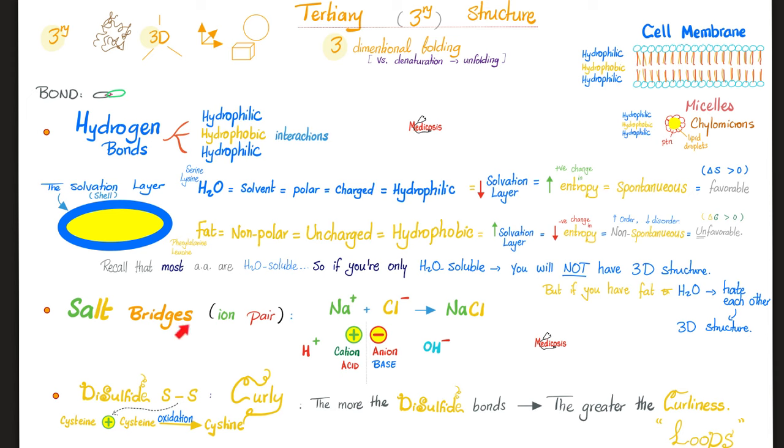And the crazy mnemonic again, yoga bridges are 3D in shape. Why do you wear 3D yoga bridges to show your curves and curls? Curls? Curly? Why am I curly? Disulfide bonds. The more disulfide bonds you have, the greater the quote curliness. They make loop in the protein structure.